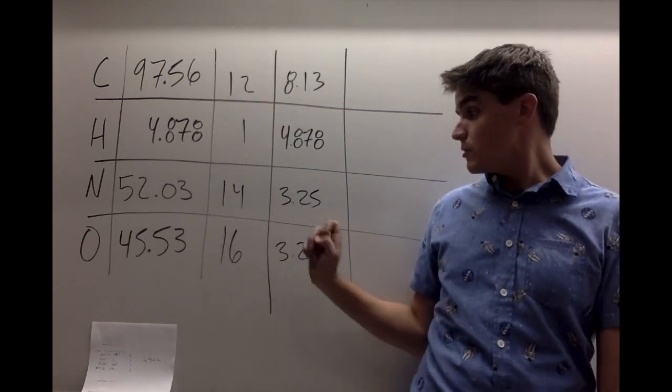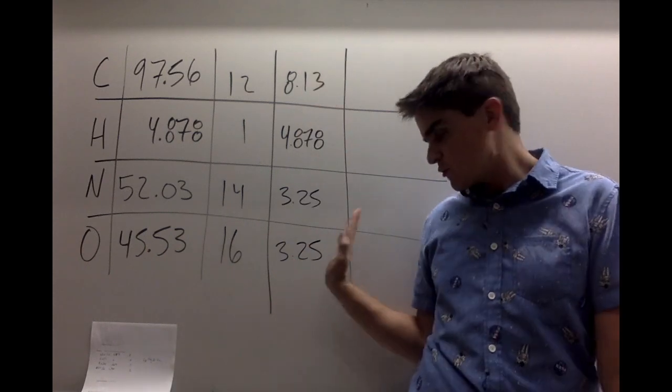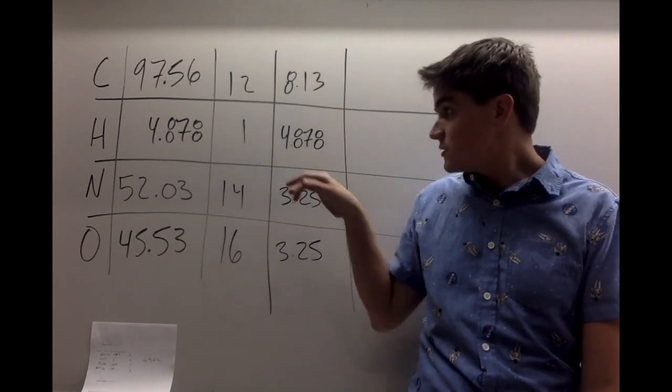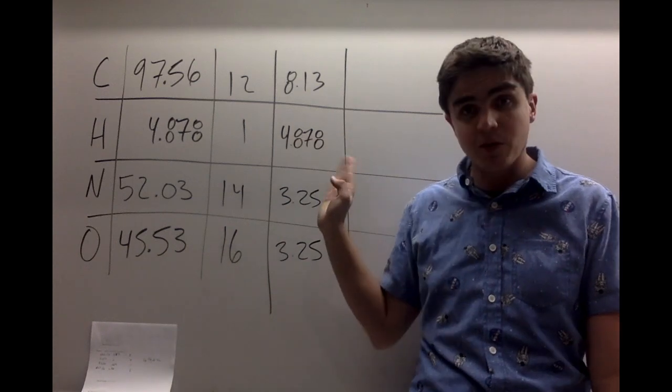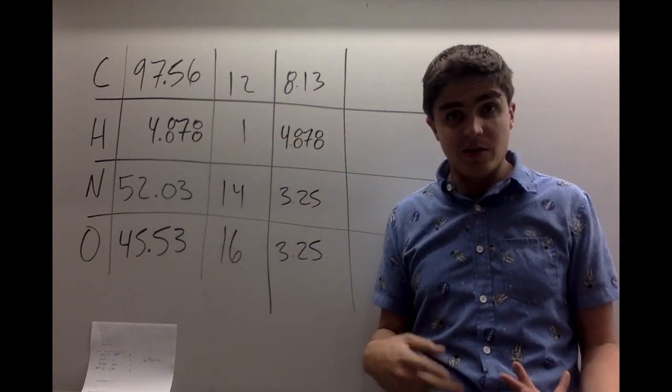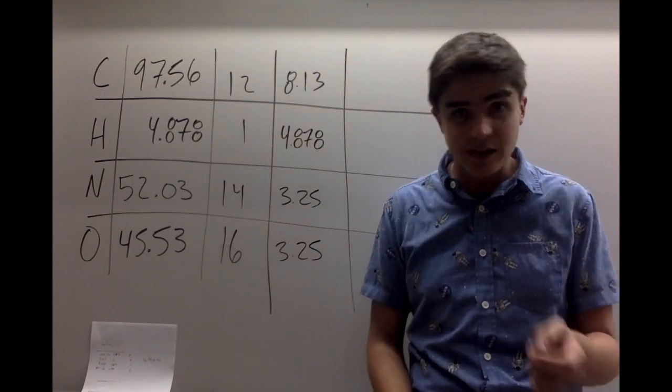Great. And my smallest number here is 3.25. So I'm going to divide everything by 3.25. 3.25 divided by 3.25. Same. 4.878 divided by 3.25. 8.13 divided by 3.25. And when I do that, I get these answers behind me. And right here, we come to a problem.